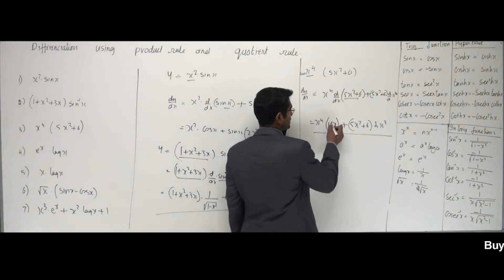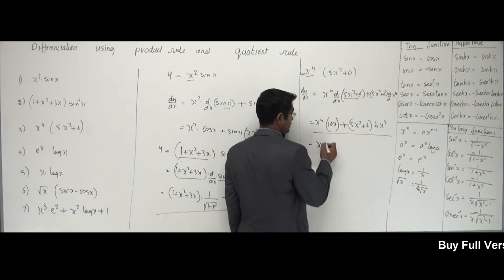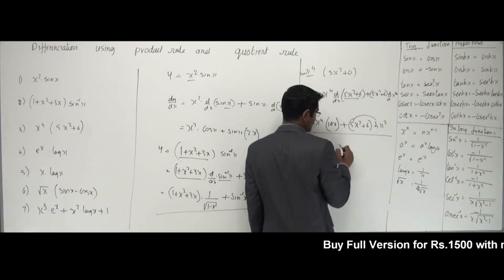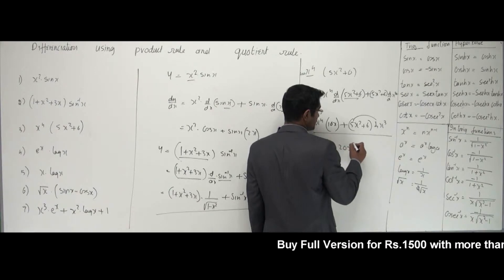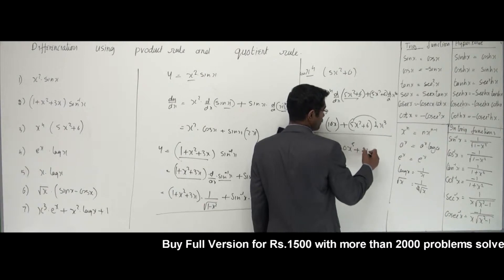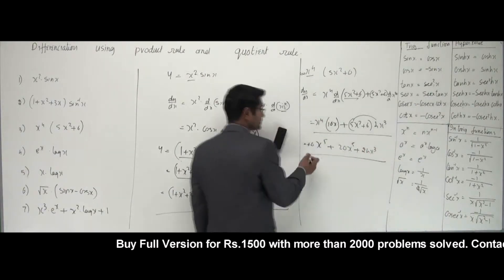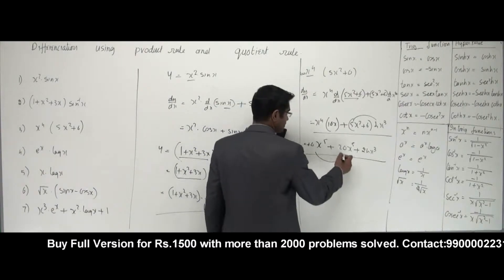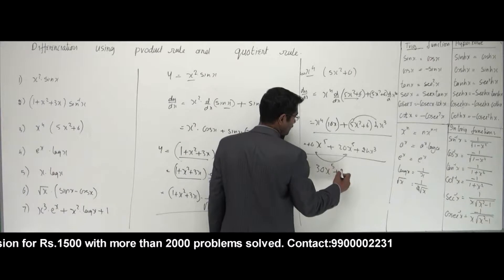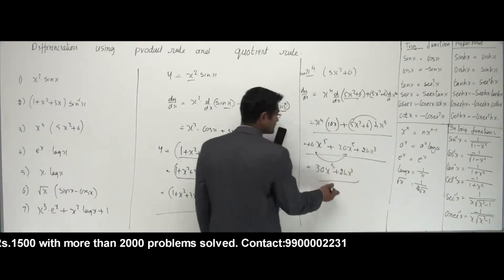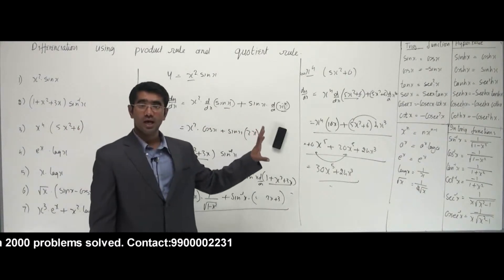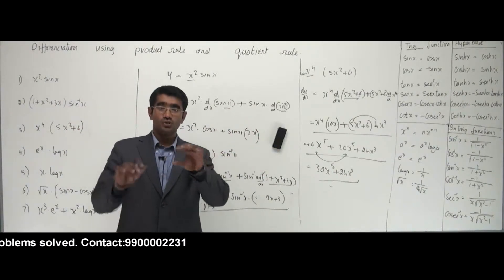Now let's expand and simplify. That gives 10x⁵ + 20x⁶ — wait, let me open the brackets: we get 10x⁵ + 24x³ from the second term. Adding them together: 30x⁵ + 24x³. That's your answer. Simple as that — just using the basic formulas and the product rule to handle the two functions together.